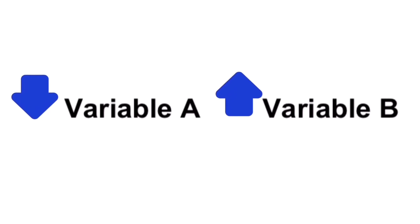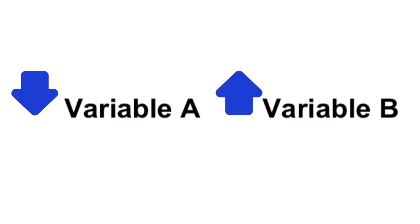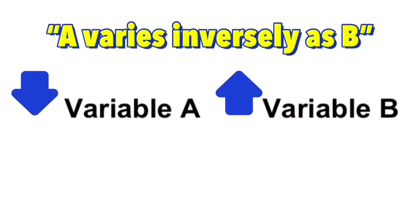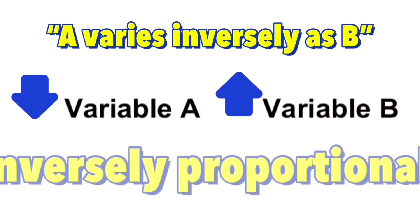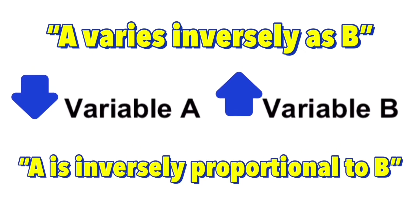So whenever we see two variables that are inversely proportional to each other, we can say that A varies inversely as B, or A is inversely proportional to B.